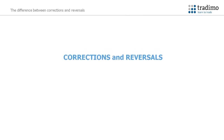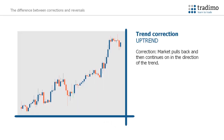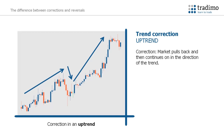A market condition can include corrections and reversals. It is important for you to be able to distinguish between the two. A correction is when the market moves in the direction of the trend, pulls back for a short time, and then continues on the original trend direction.